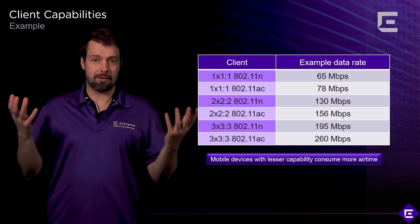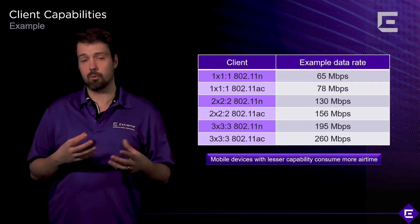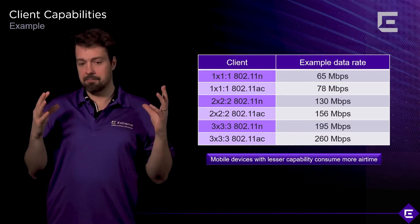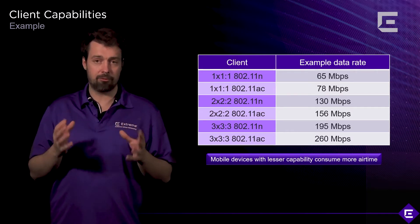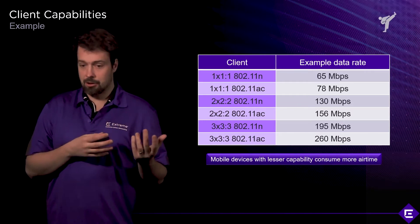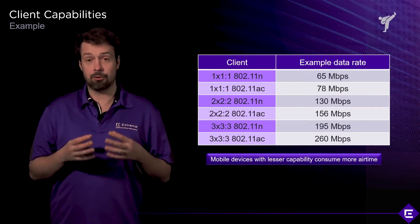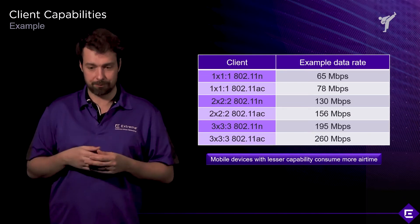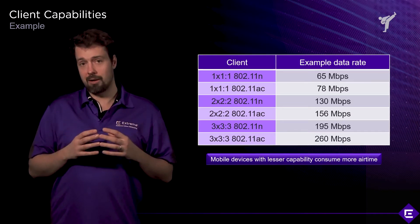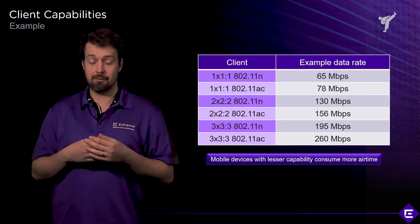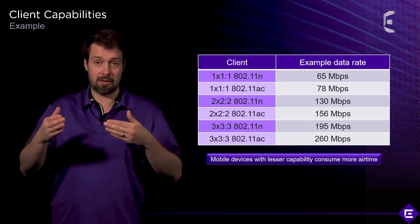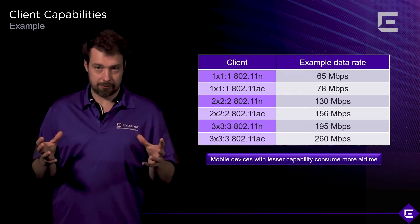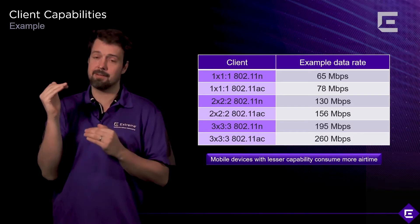So what does that mean? Here's an example of how different client devices with different radios translate to maximum data rates. A 802.11ac 3x3 through 3 laptop on a 20 MHz channel will be able to negotiate a data rate of 260 Mbps — the maximum data rate that client device can use for communication with the access point. A 1x1 through 1 802.11ac client will be able to negotiate a maximum of 65 Mbps across the 20 MHz channel, so you can immediately see that those two devices will have a vastly different data rate.